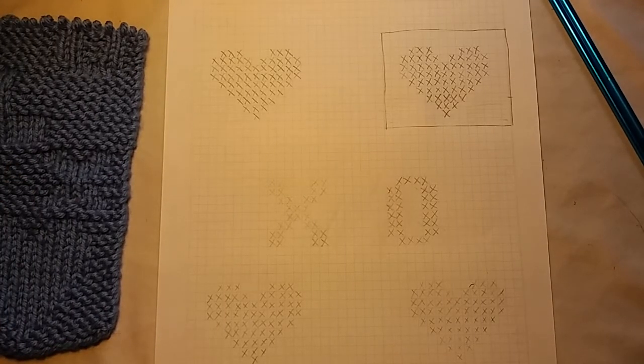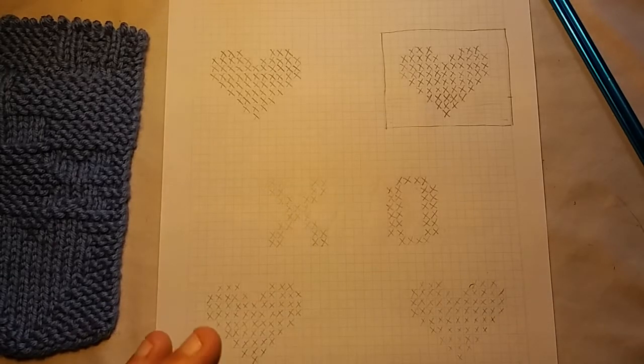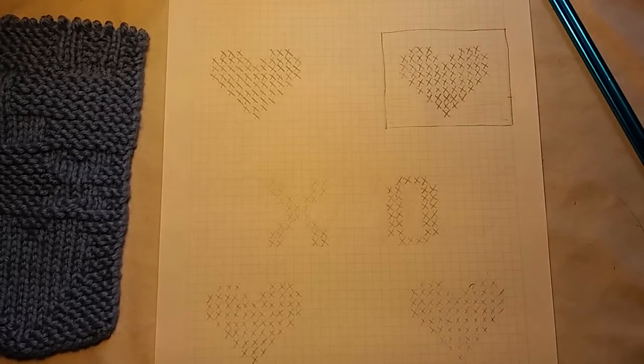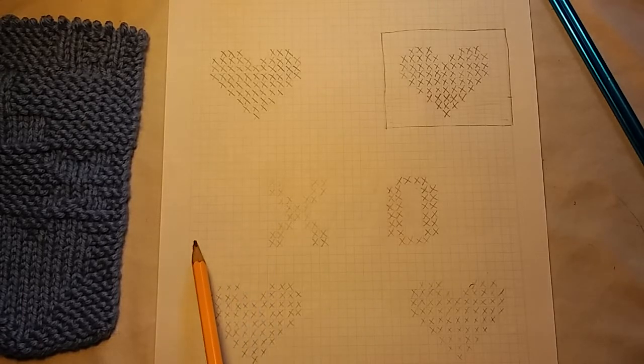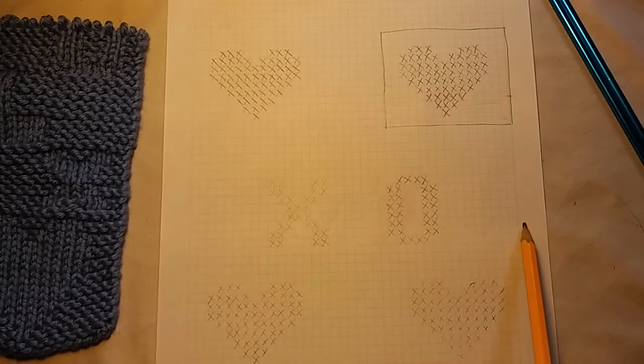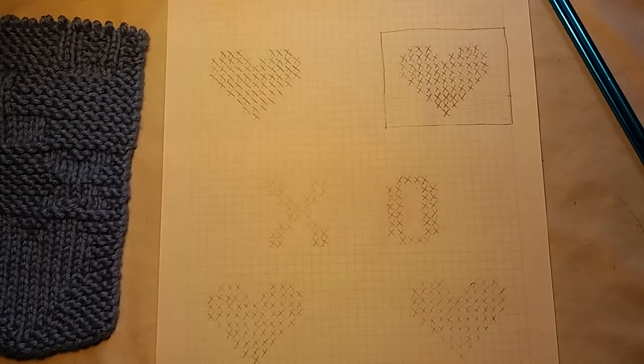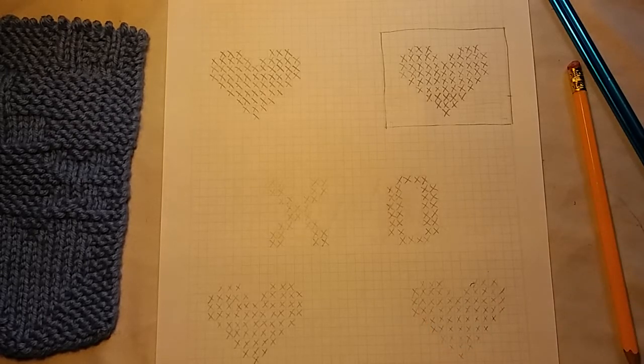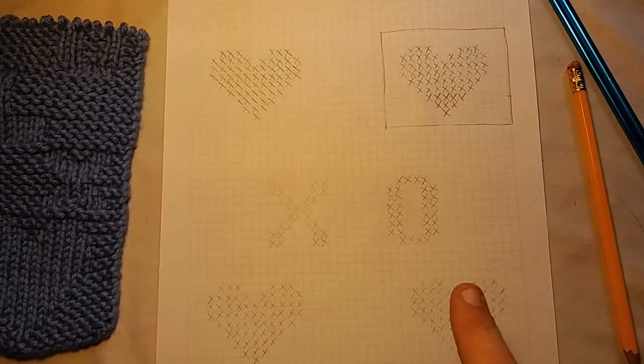It's got 38 little squares going across. I recommend scarf or even dishcloth or washcloth to start out with to make your own design. And how, in my head, I do it is I think of each one of these little squares here as stitches. So, in this case, I have 38 stitches. So that's how I calculate it in my head.